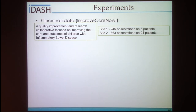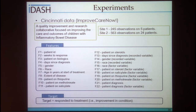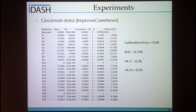Our last experiment was conducted through our collaborator without intervention. Dr. Casey Masolo from Cincinnati Children's Hospital tried out WebGlow using their own data — the ImproveCareNow data — originally used for improving outcomes of children with inflammatory bowel disease. Two sites of data with 22 features and a single target variable indicating whether the patient responded to treatment were used. The results showed no difference in calibration error, AUC, and Hosmer-Lemeshow test.